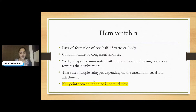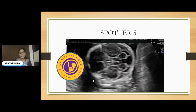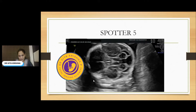Let us go to the next slide. This is spotter number 5. This is a fetus of 21 weeks old. We did screening at 16 weeks as well — it was absolutely normal at that time. Now we are able to see a continuity from the 4th ventricle to cisterna magna with a widened Blake's pouch. What is your diagnosis here?